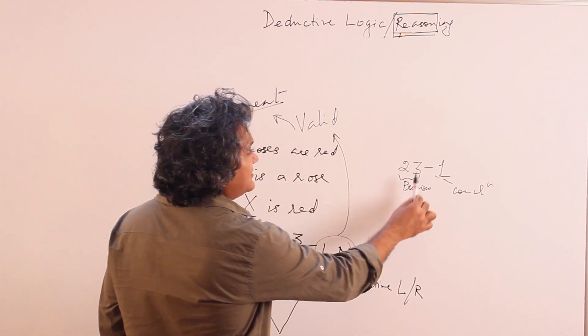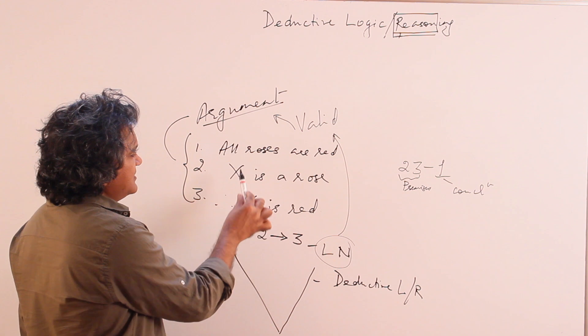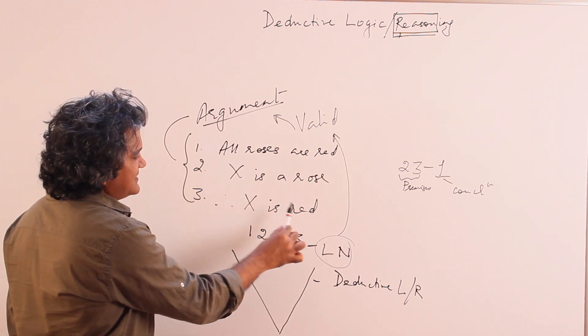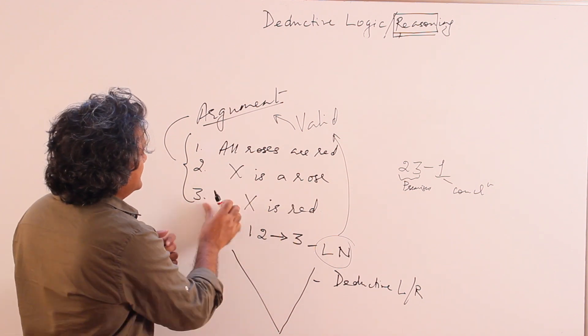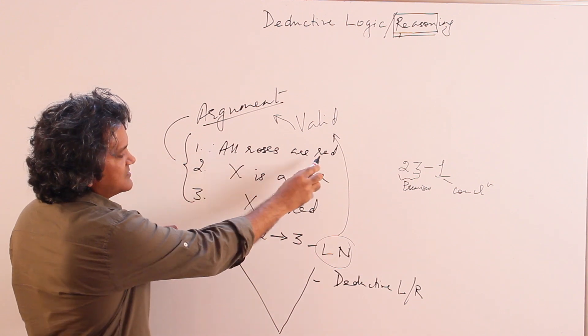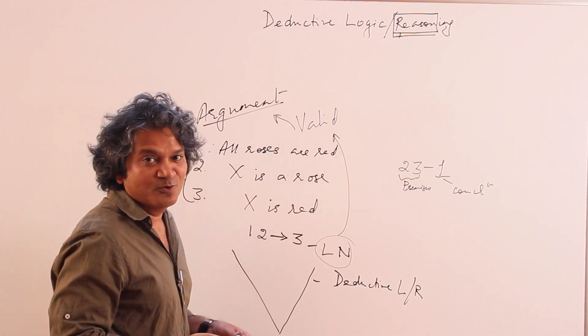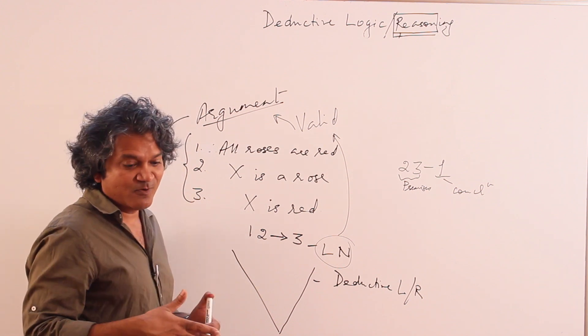So does this follow? Basically what is happening is X is a rose, X is red, and therefore all roses are red. Does this follow? So you will obviously say no, obviously doesn't follow. But let me ask you a question.